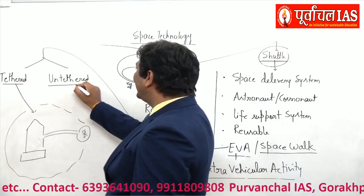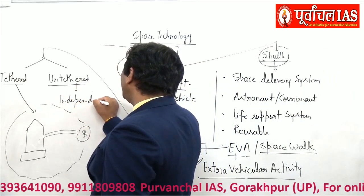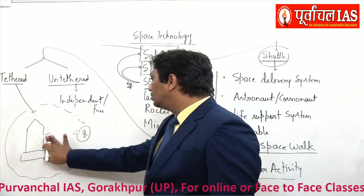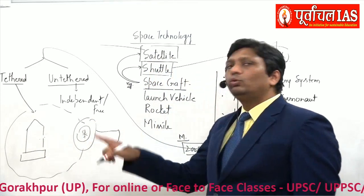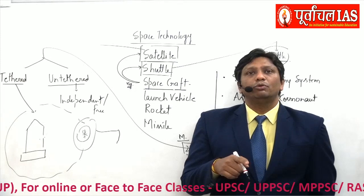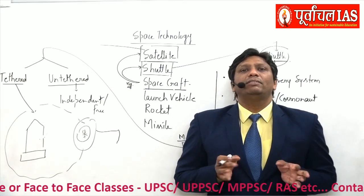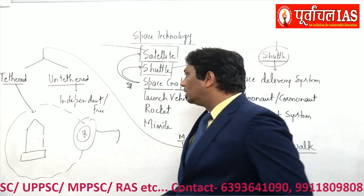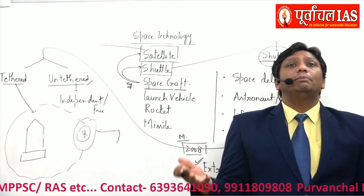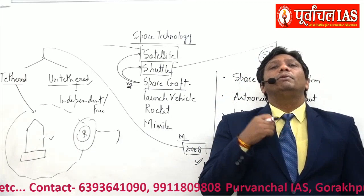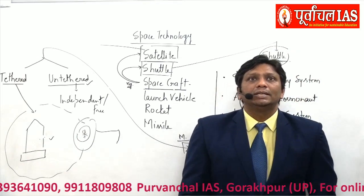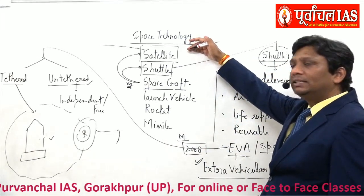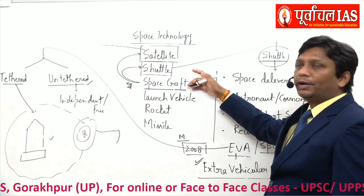In untethered EVA, the astronaut's body is independent and free from the shuttle. They move out from the shuttle and do their own activities. In the movie Gravity, astronauts have small vehicles in space and move using those vehicles with oxygen support systems. That is untethered EVA — body is independent and free from the shuttle. I recommend watching the movie Gravity to understand these concepts.